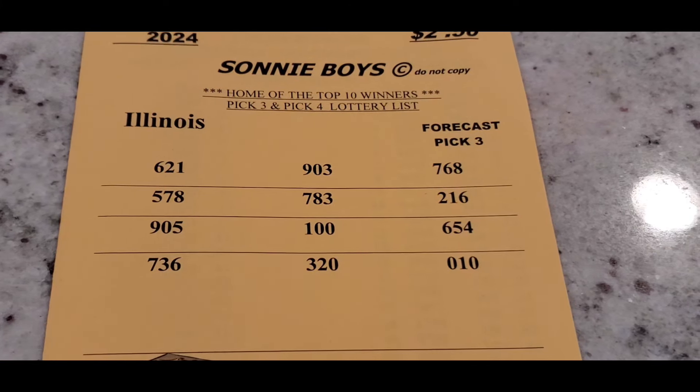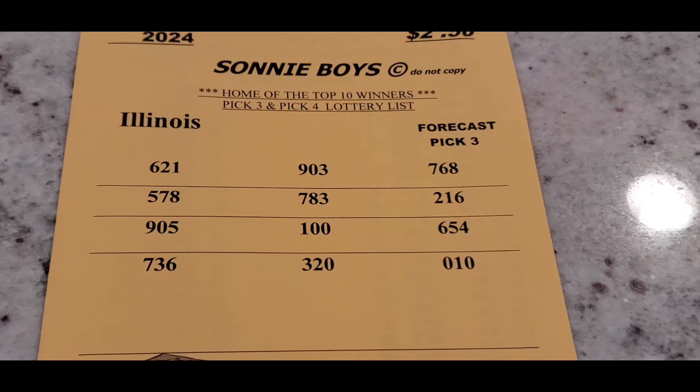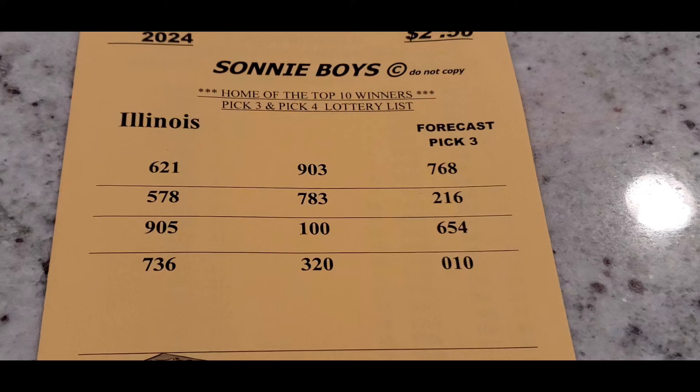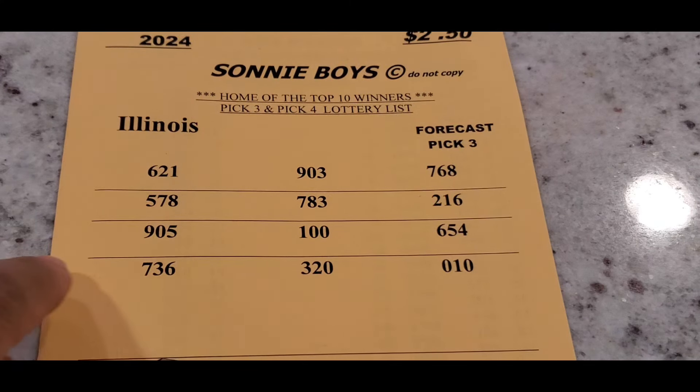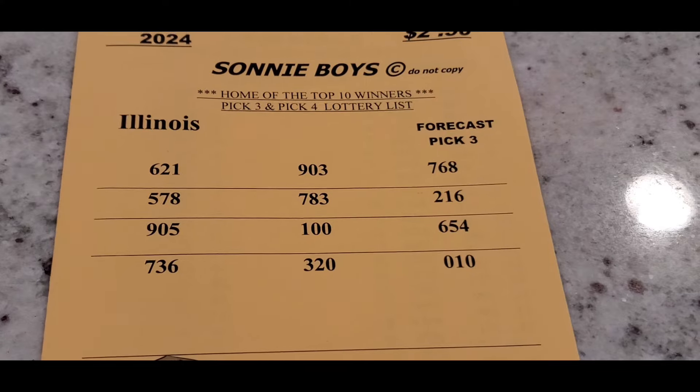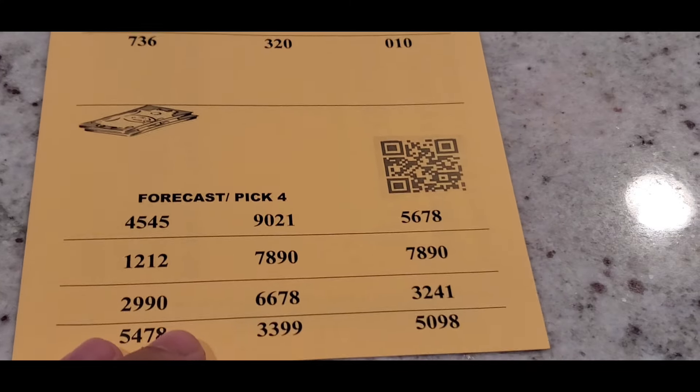You get 621, 903, 768, 578, 783, 216. They give you all the best numbers on the front of the sheet here. And if you scroll down, you get to pick four numbers.